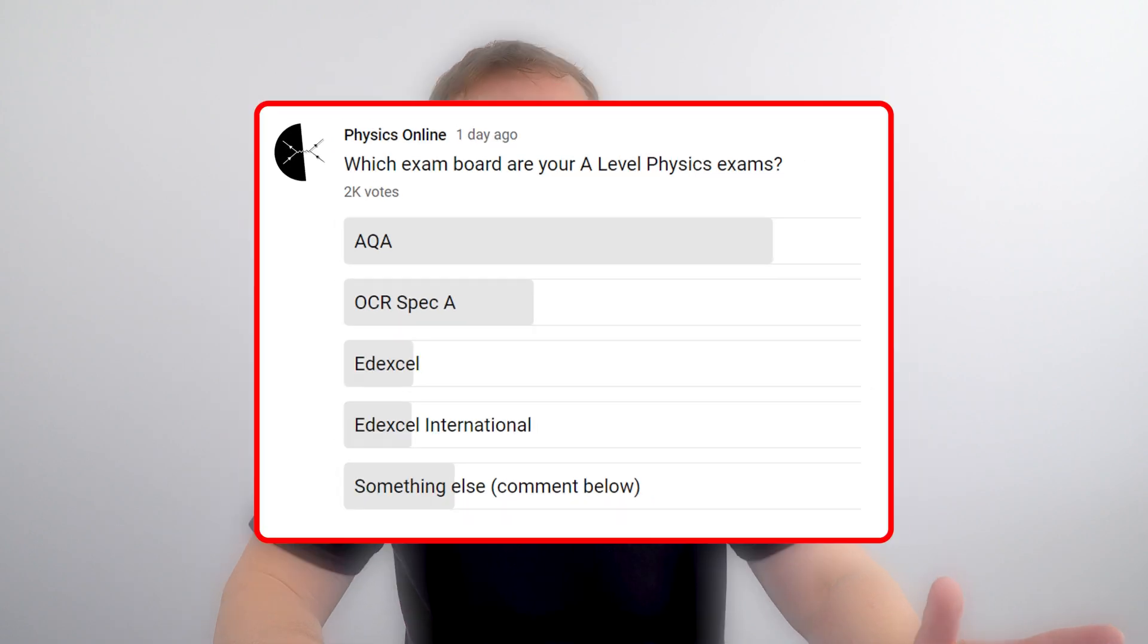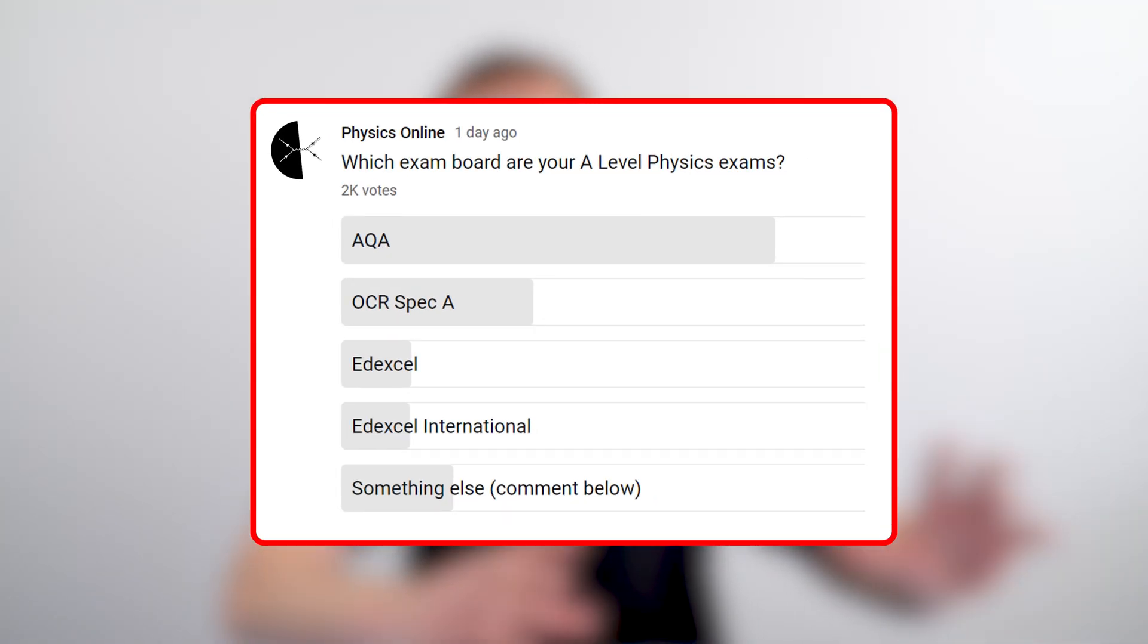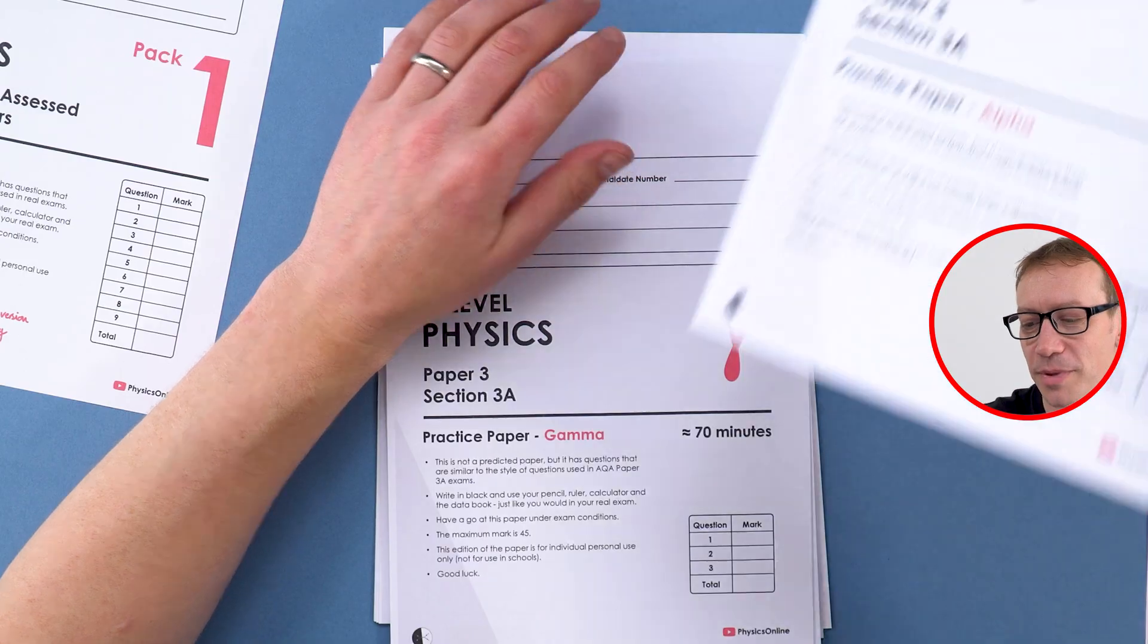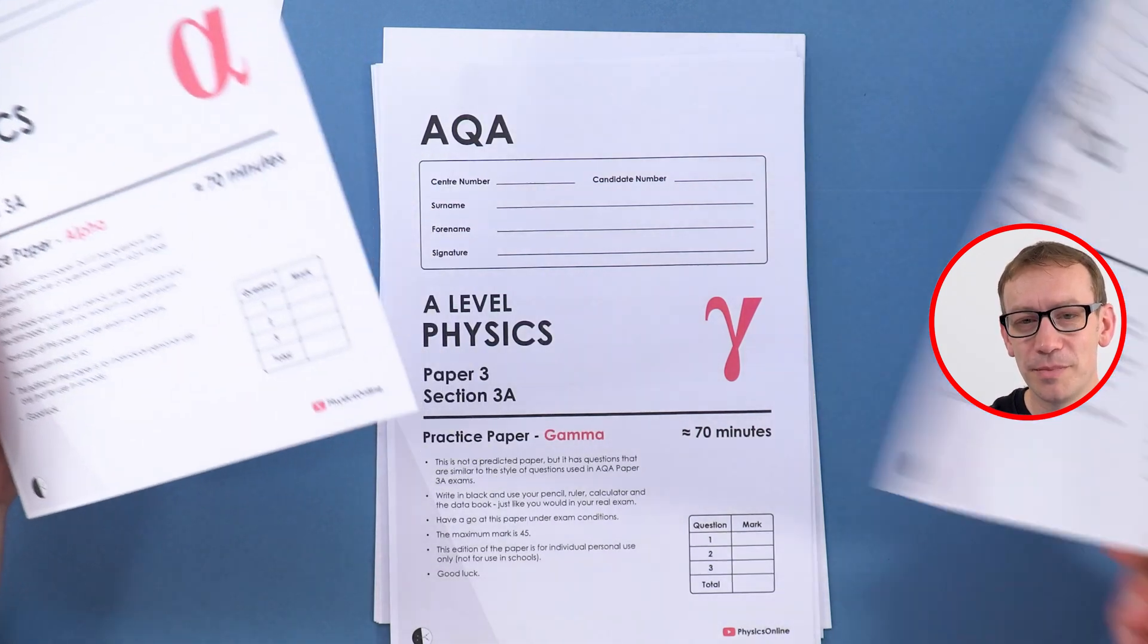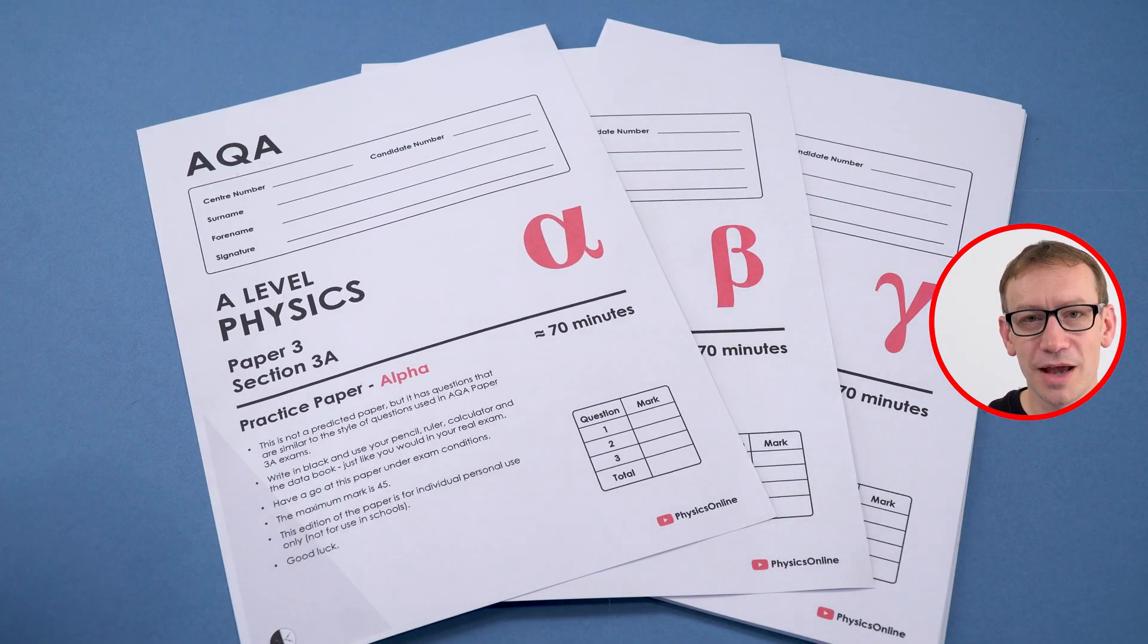For AQA, which is the board I think most people are doing—about 54% of students who I surveyed are doing AQA for A-level physics—you can buy paper alpha. It's only £2.99 on my shop. What I've been really pleased about is over the last few weeks, lots of students will buy the first one and then they'll come back and buy the second one and then the third.